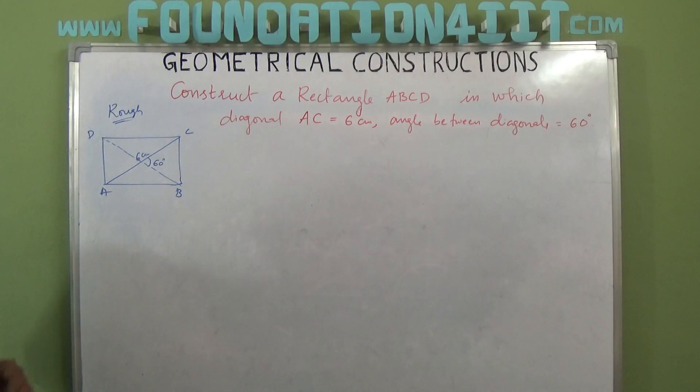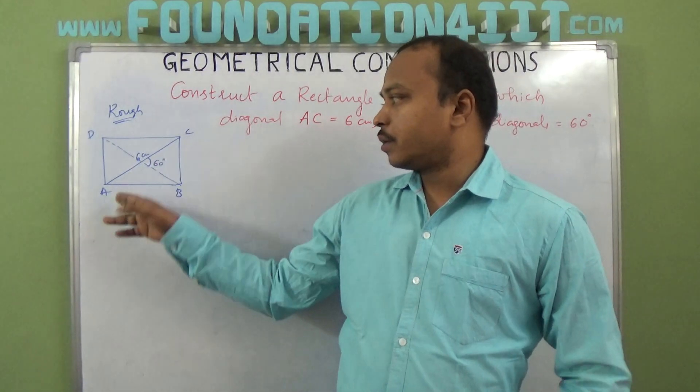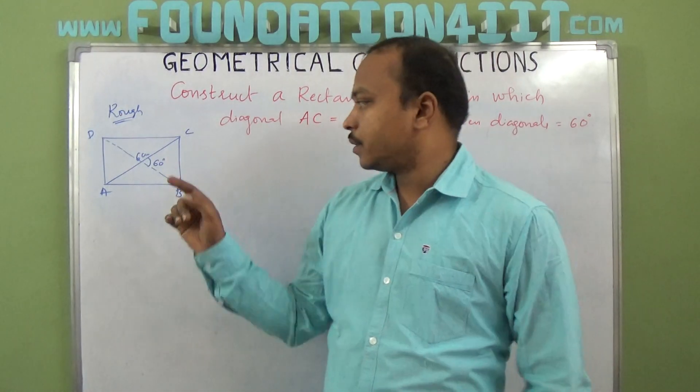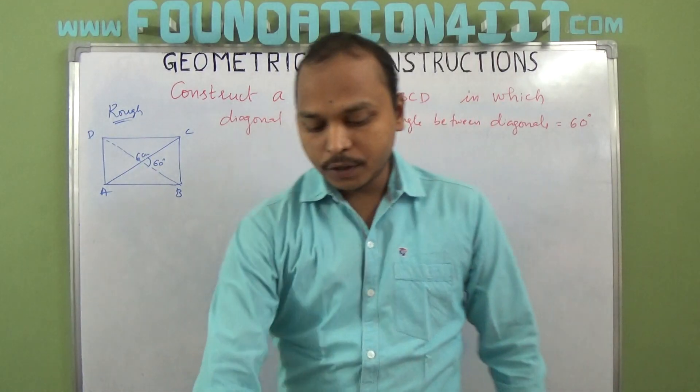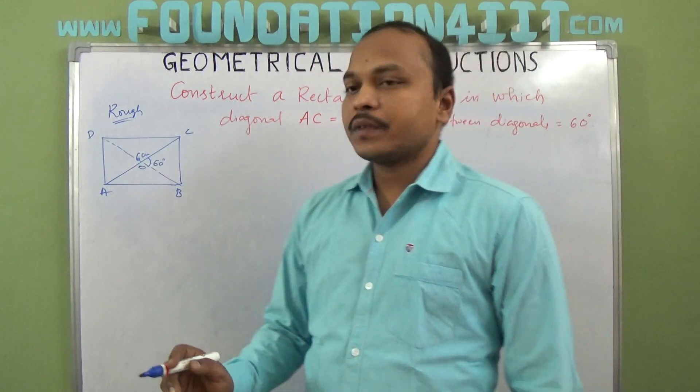This is the given data: AC is 6 centimeters and angle between the diagonals, meaning angle BOC if you take the point as O, BOC is 60 degrees.